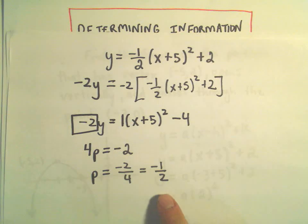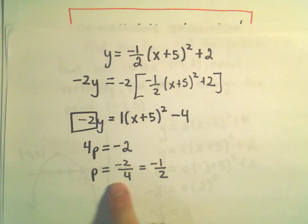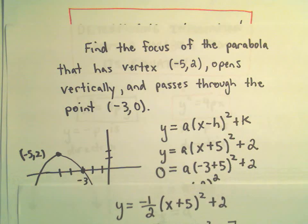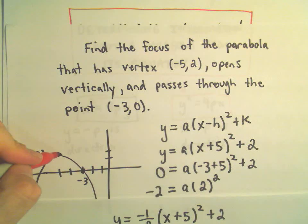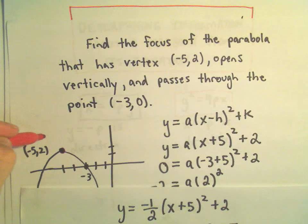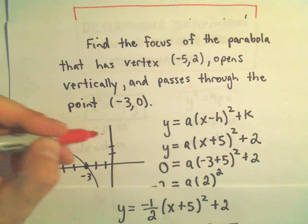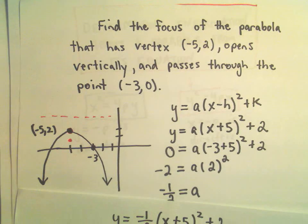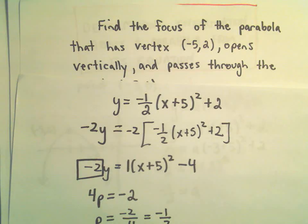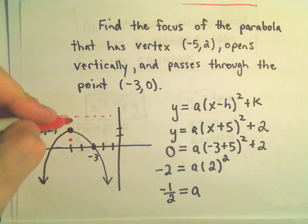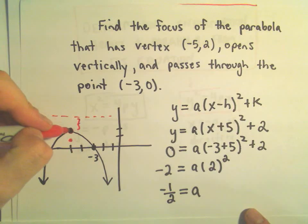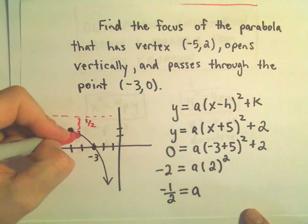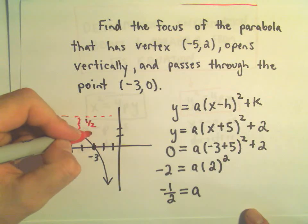If you take the absolute value of this number, negative 1/2, that's going to be the distance that I go away from the vertex to find the directrix and the focus. So the absolute value of negative 1/2 is positive 1/2. That's the distance from my vertex to my directrix and also to the focus.